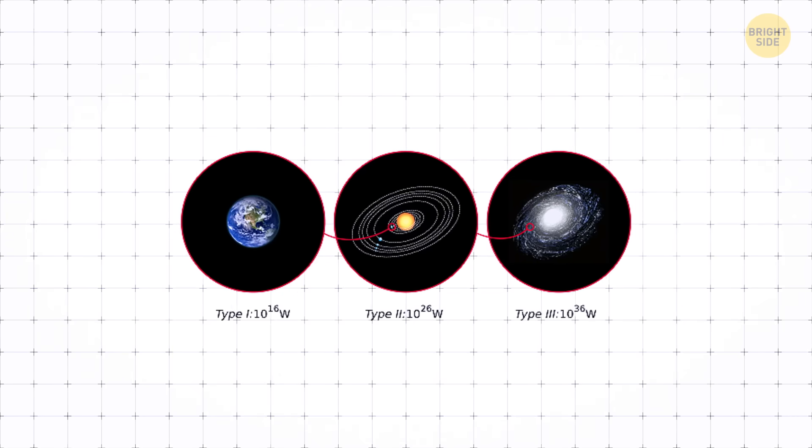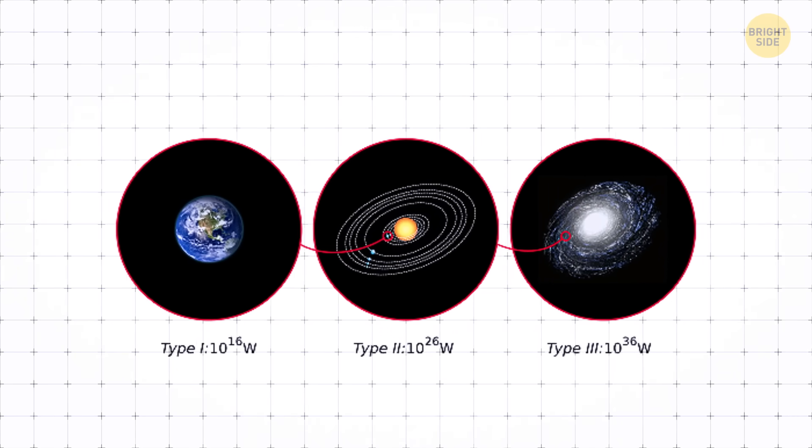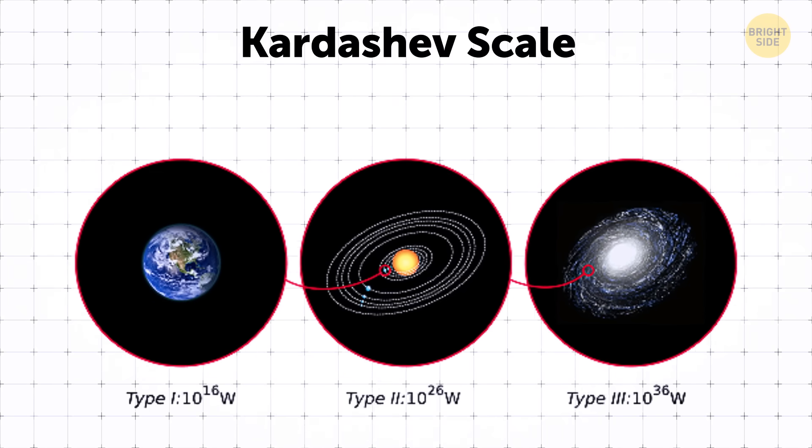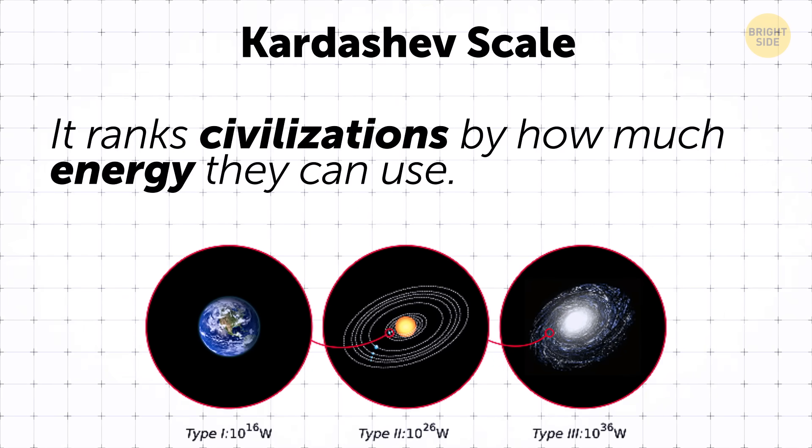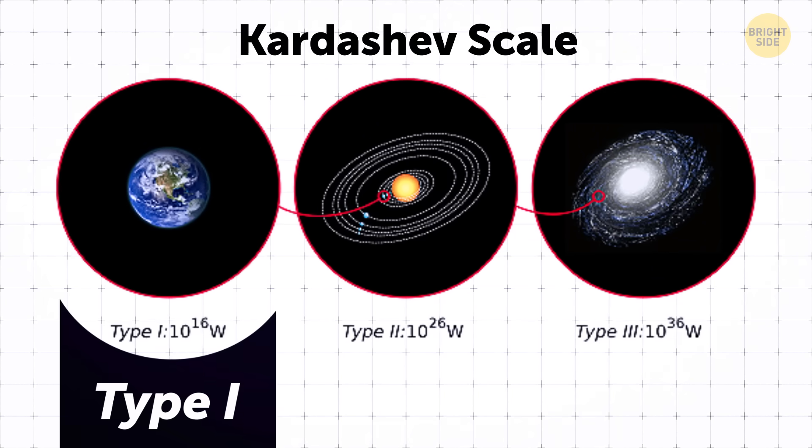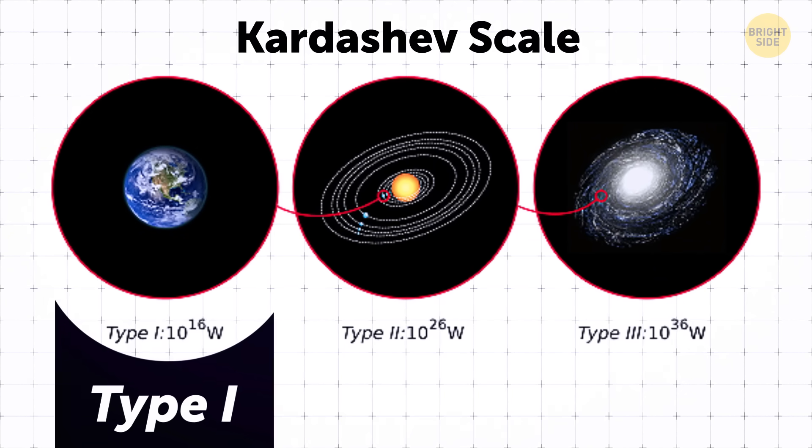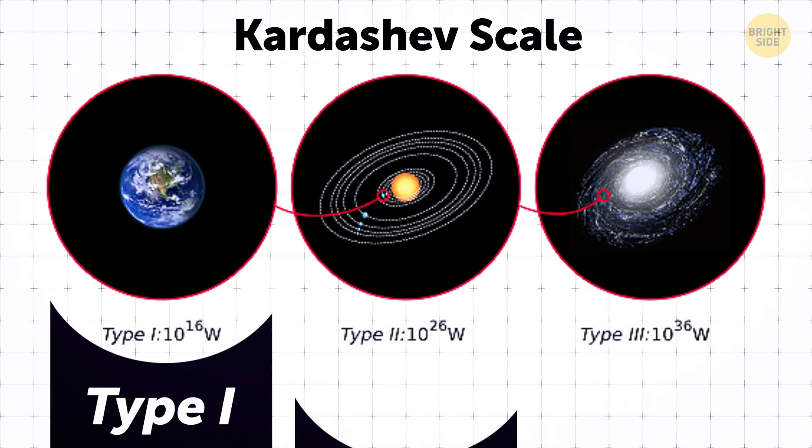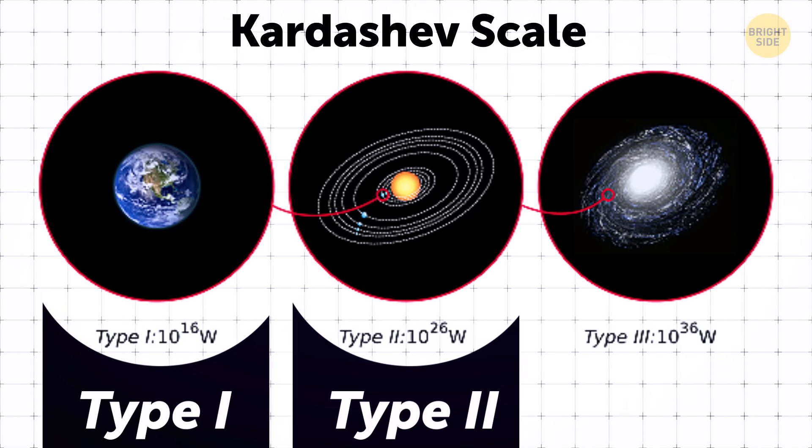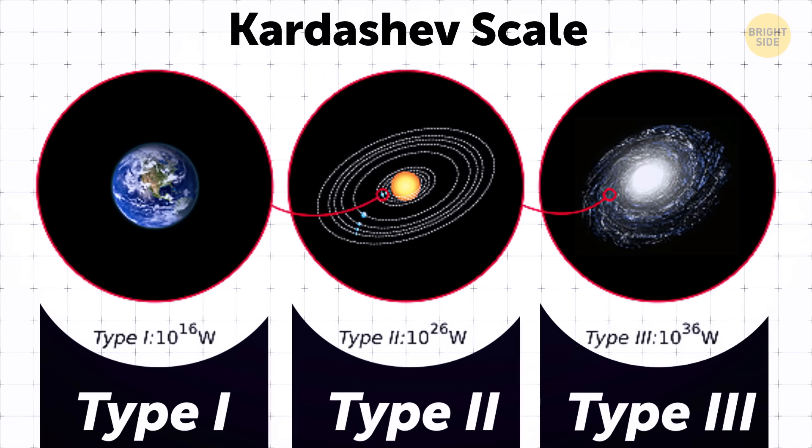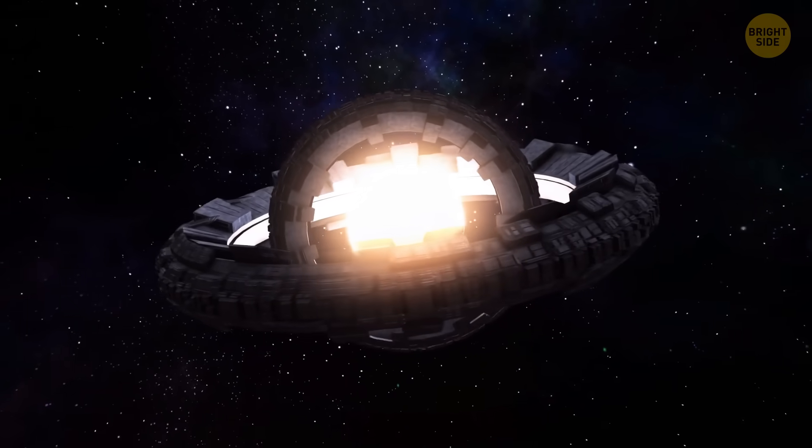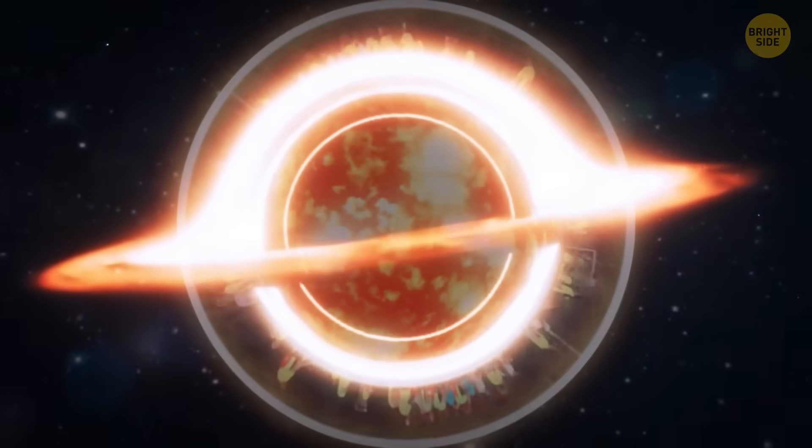To understand just how advanced a Dyson sphere-building species would have to be, scientists use the Kardashev scale. It ranks civilizations by how much energy they can use. Type 1 can use all the energy available on their home planet. Spoiler, we're not even there yet. Type 2 can harness all the energy from their star. That's the Dyson sphere level. Type 3 can use energy from an entire galaxy. Think Dyson spheres around every star and even extracting energy from black holes.